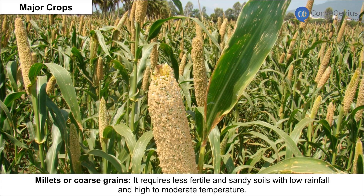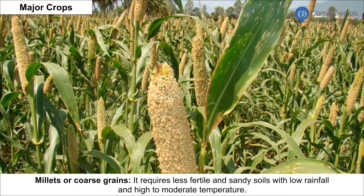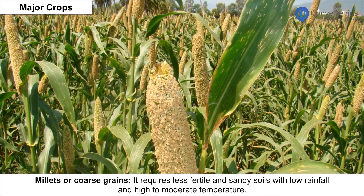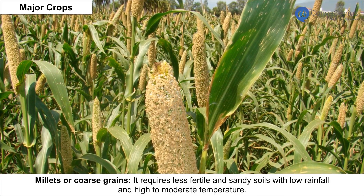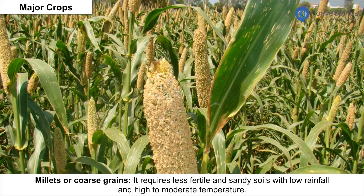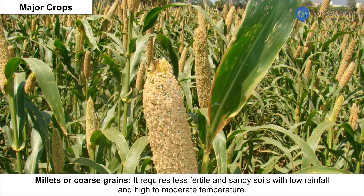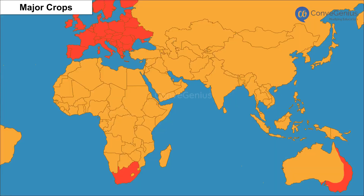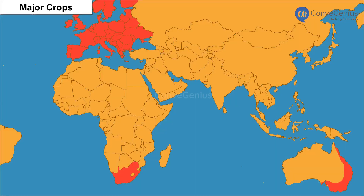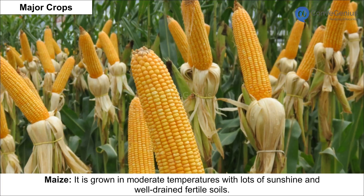Millet requires less fertile and sandy soils with low rainfall and high to moderate temperature. Millet is a popular crop in India, Nigeria and China.